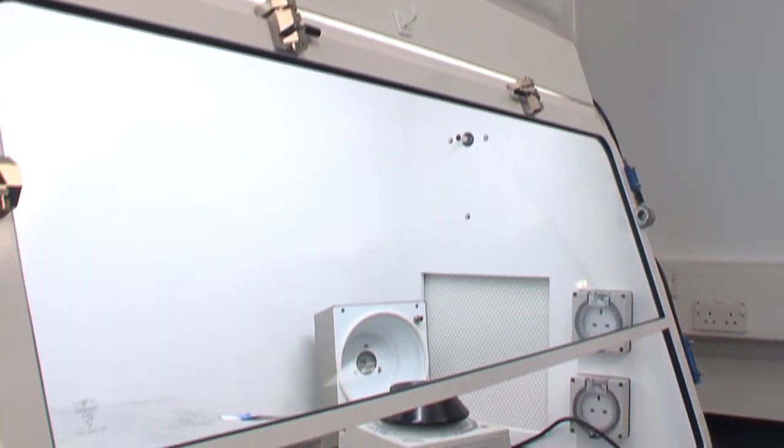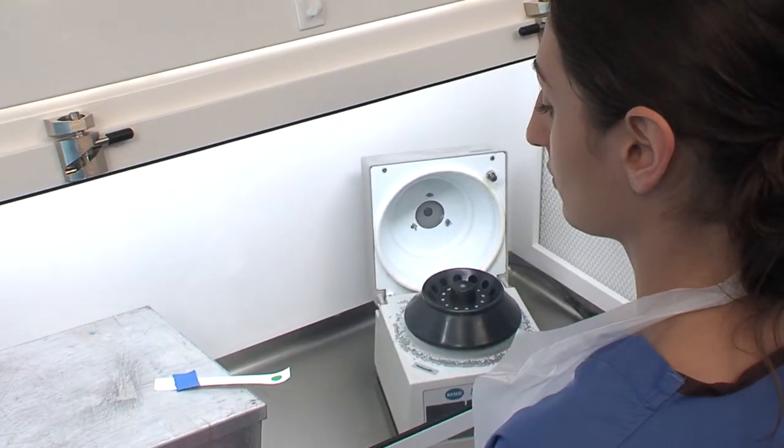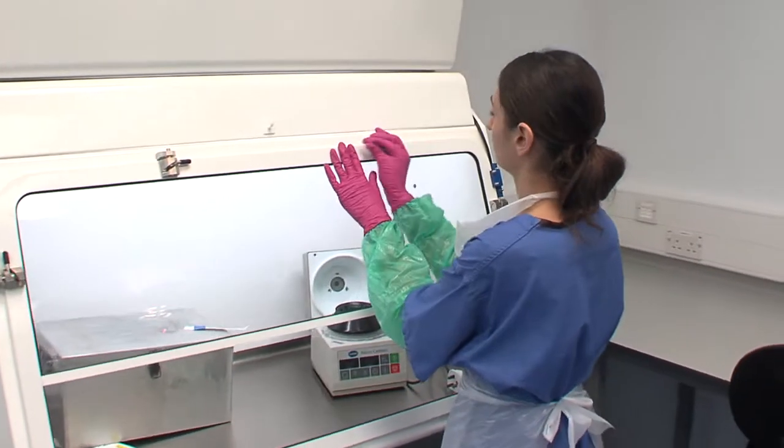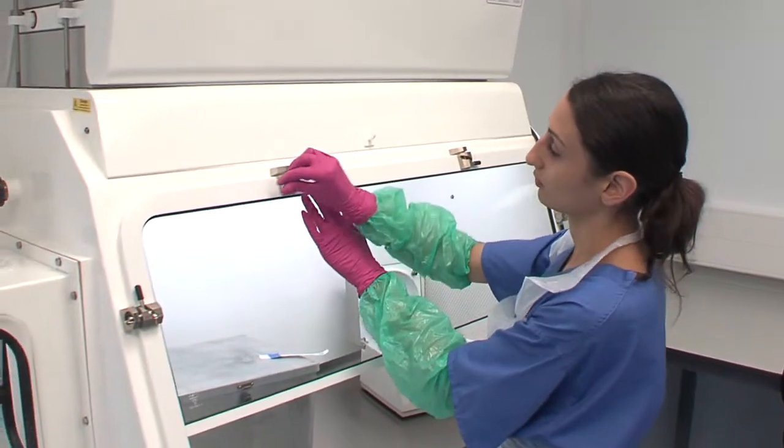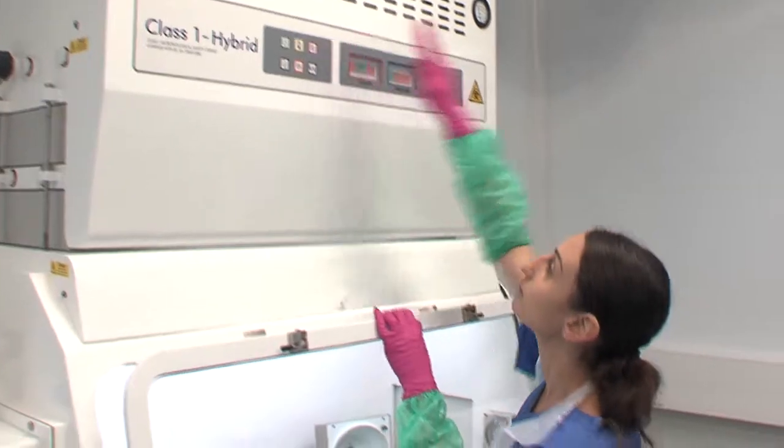The front opening of the cabinet allows the operator to reach the work surface inside and observe what they are doing through a glass panel. This panel can be fully lowered. It should only be opened for cleaning, servicing, or equipment removal following fumigation.